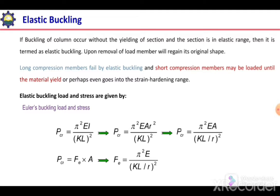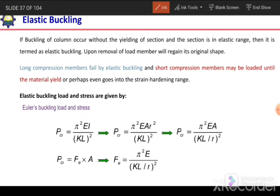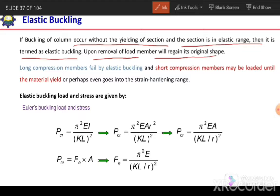First, elastic buckling. If buckling of a column occurs without yielding of the section and the section is in the elastic range, then it is termed as elastic buckling. Upon removal of load, the member will regain its original shape. The column section will not yield and it will remain within the elastic range. The long compression members fail by elastic buckling.